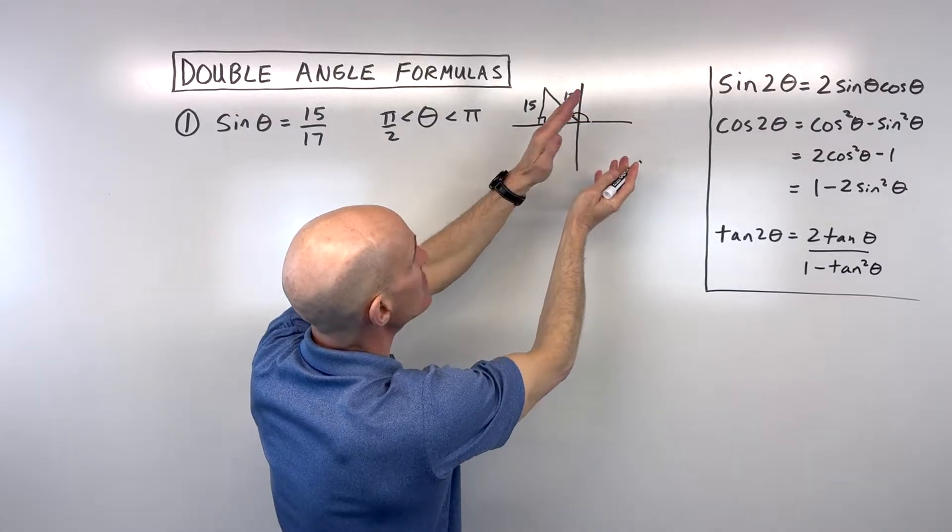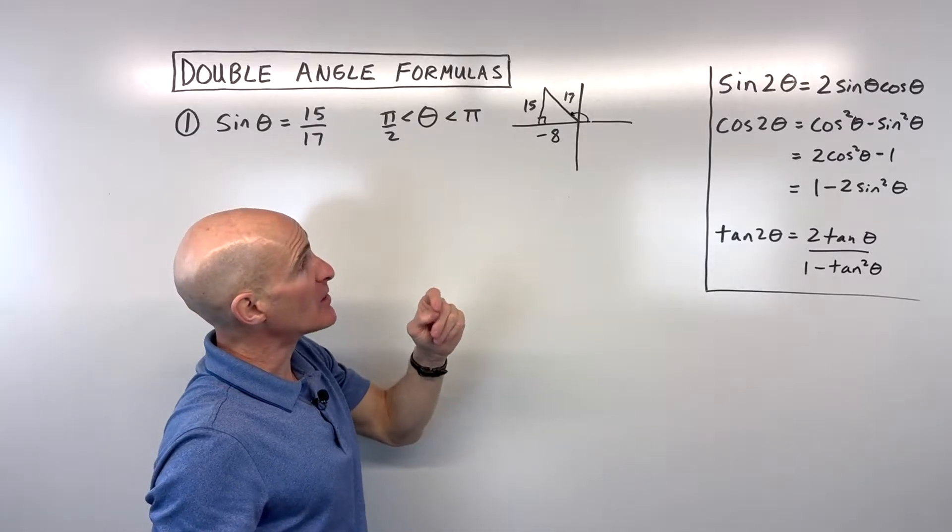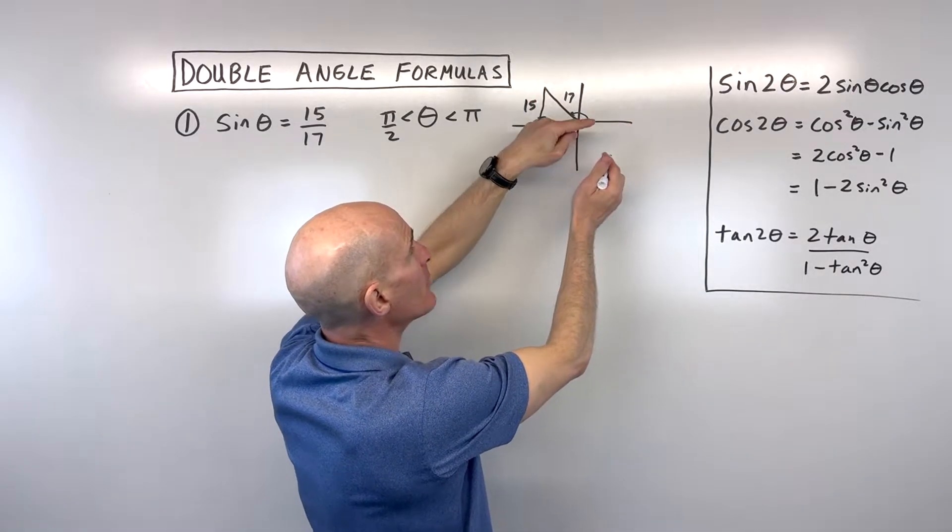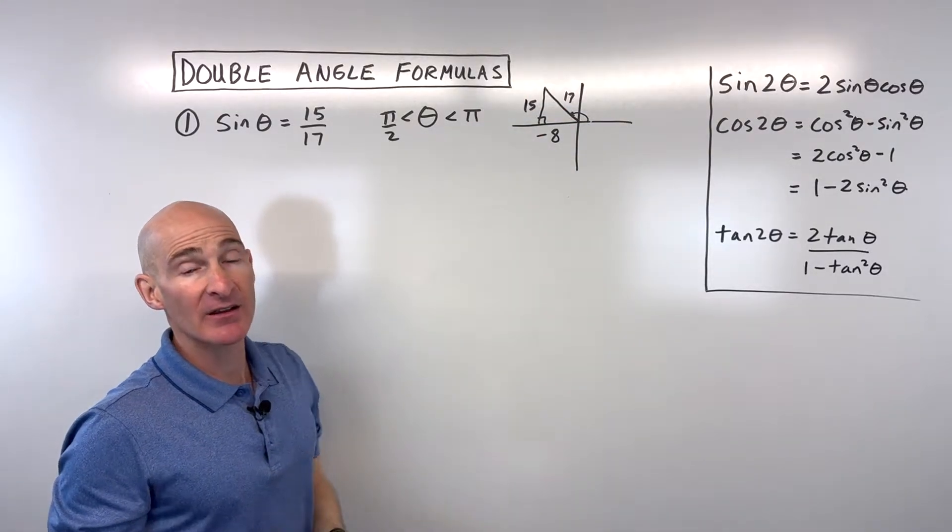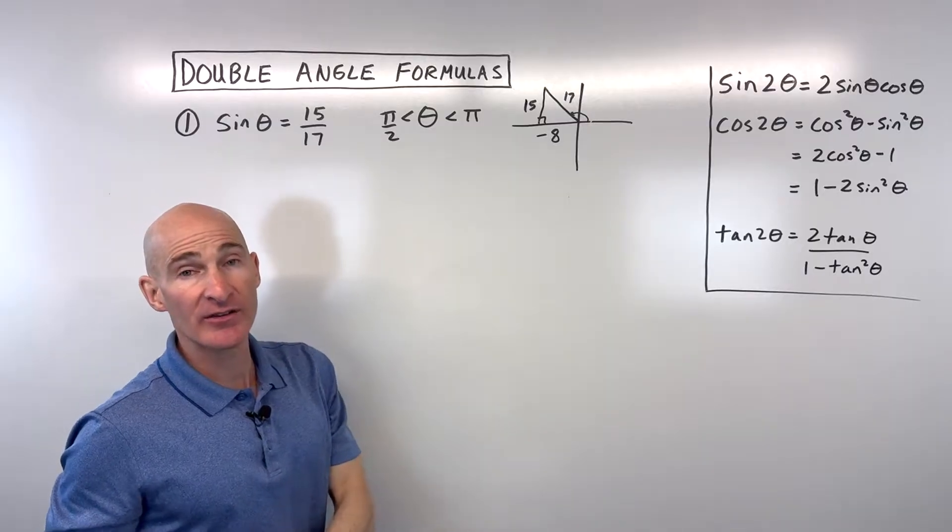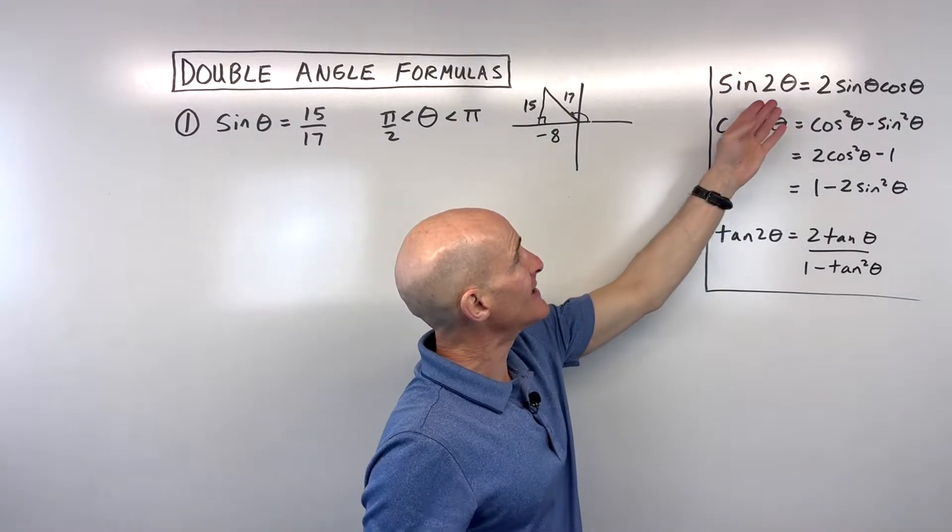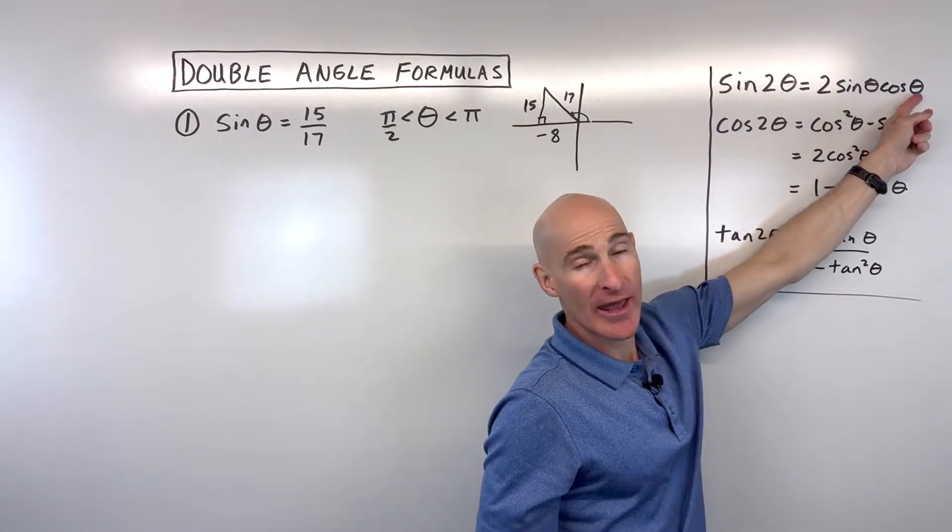Now what we're going to do is calculate this angle θ. Imagine if we were to double that angle. We don't know the exact angle measurement, but if you can visualize that angle being doubled, what would be the sine, cosine, and tangent of that angle? We're going to use these double angle formulas which take twice the angle and write it in terms of just one θ.